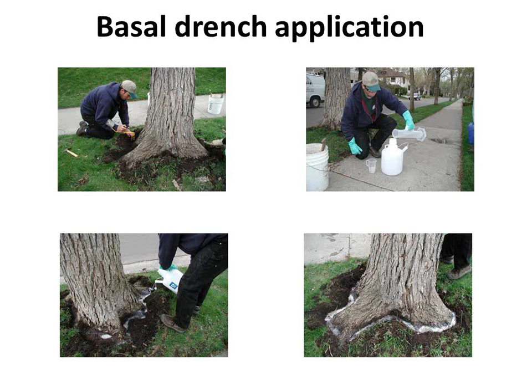For subsurface basal drench, dig a small moat at the base of the tree — two to four inches wide by two to four inches deep — and apply to the mineral soil. If working on a hill, make dams in your moat so the product is applied evenly. Apply the product uniformly around the base, and I typically recommend applicators make a couple of turns around the tree to ensure even distribution. Allow the product to be absorbed by the soil, then replace the soil on top. It's a very targeted application made right at the base of the tree in just a few minutes.